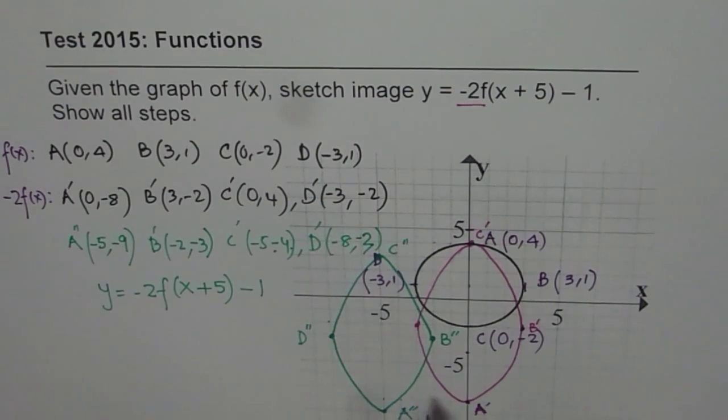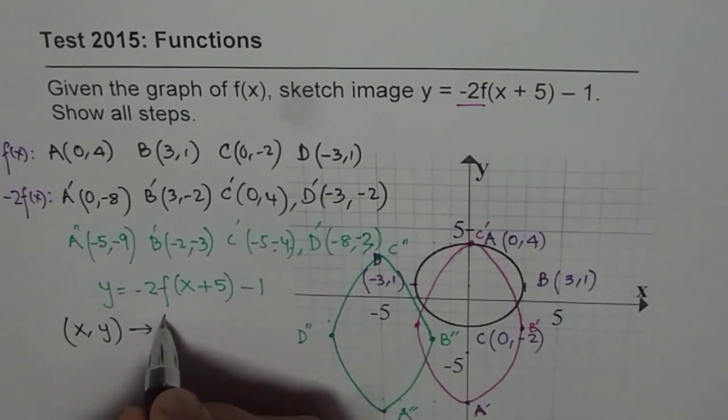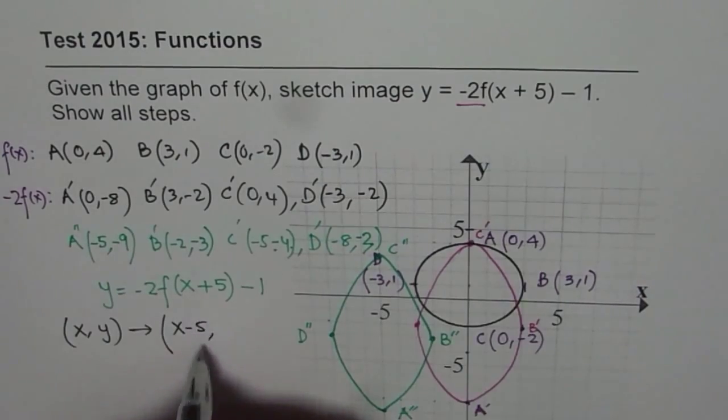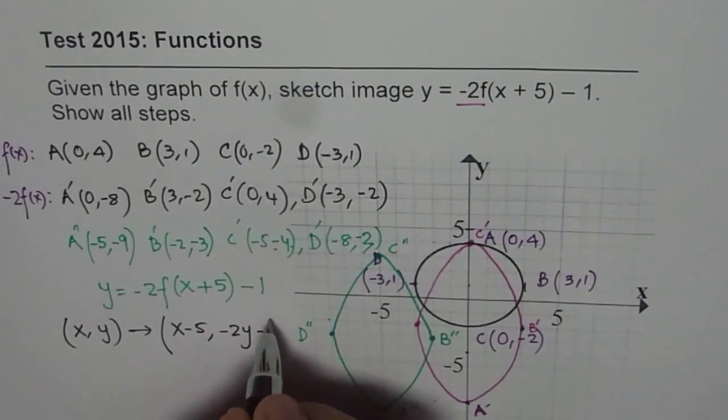We could have done directly also, that is to say, if X and Y are the original points, then on the transformed function, the X point is minus 5. So original value minus 5. For Y point, we have to multiply it by minus 2 and then take away 1.